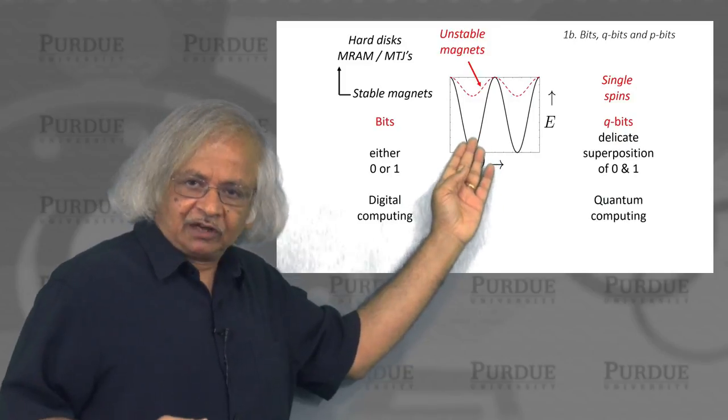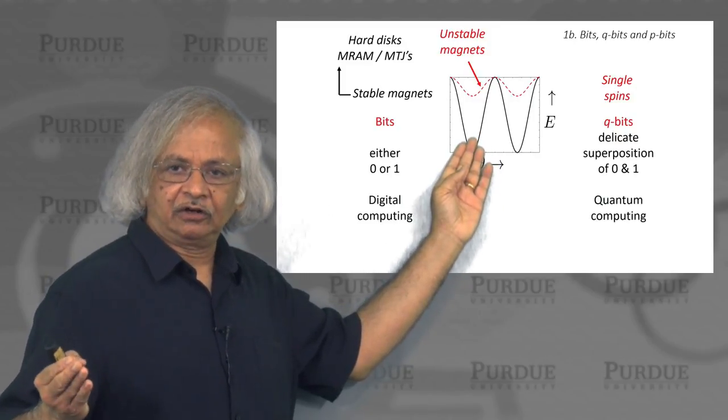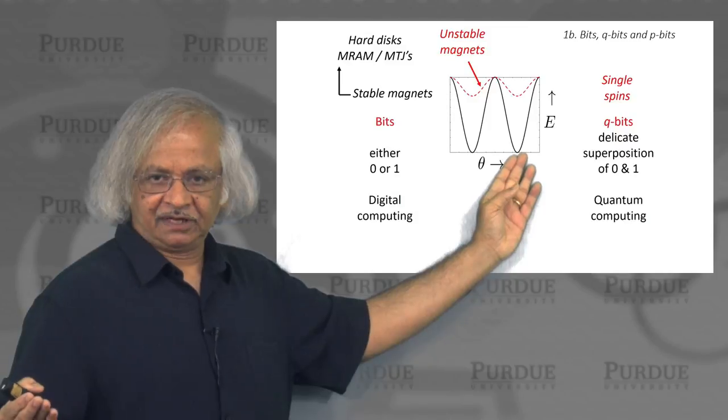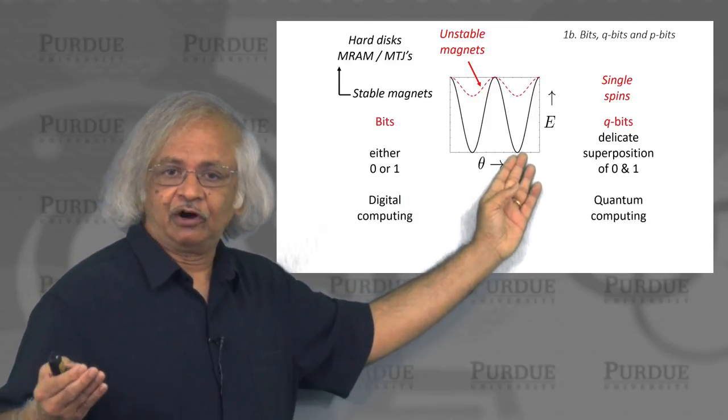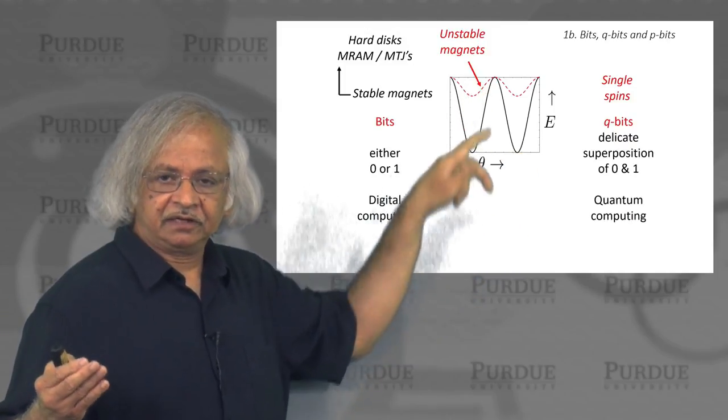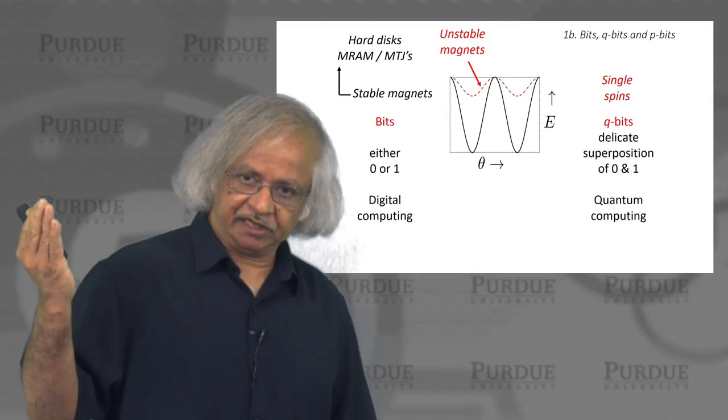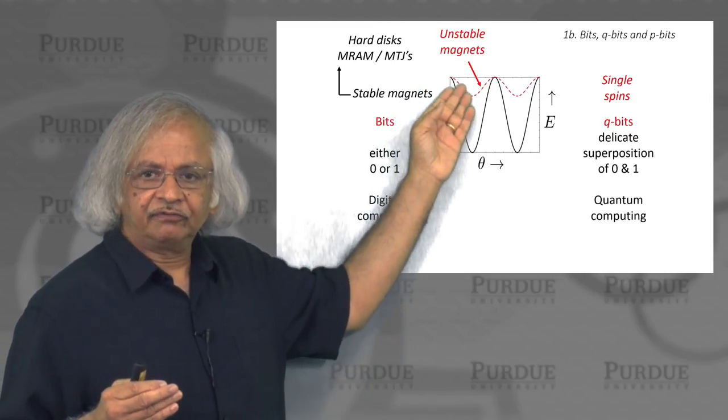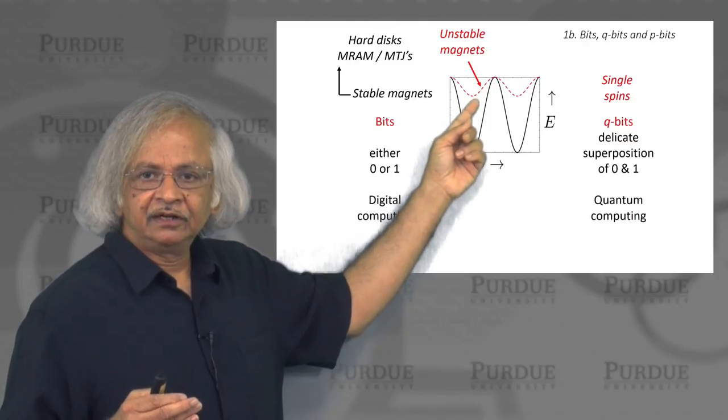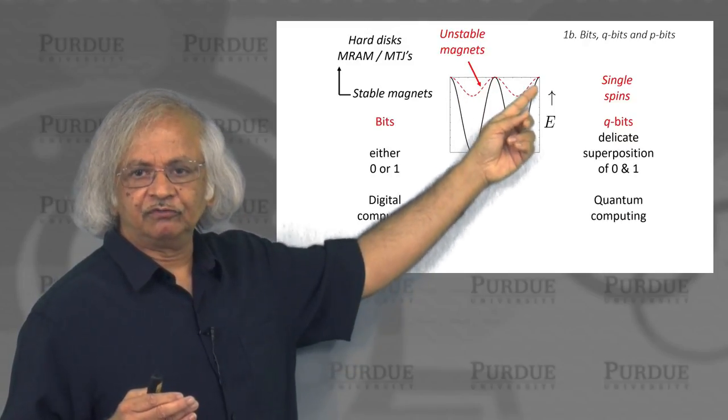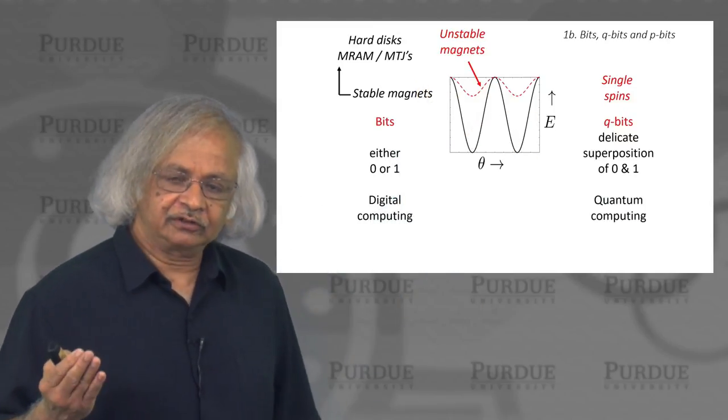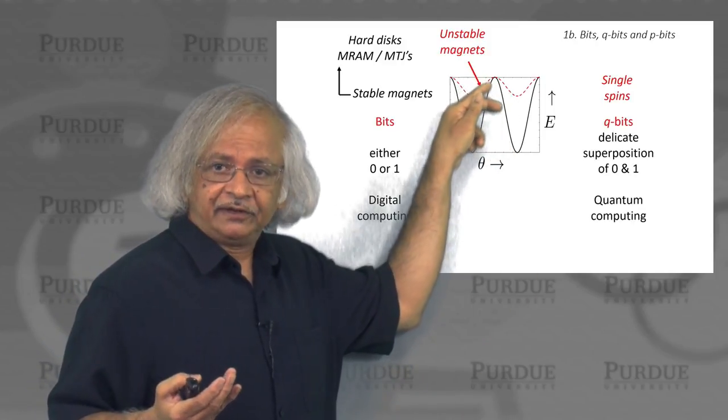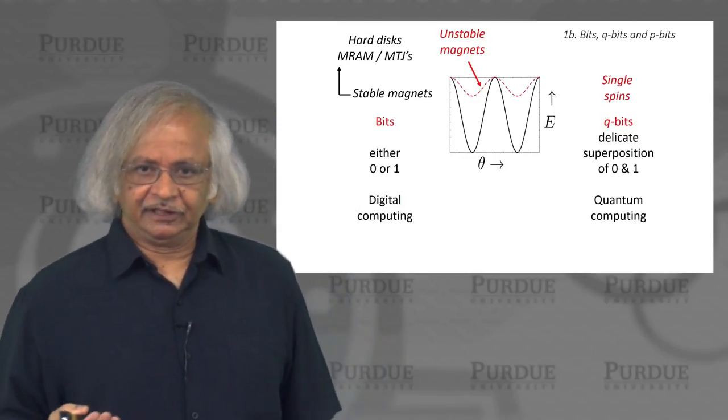Usually if you put the magnet in one of these states, it stays there for a very long time. Why? Because there's a big barrier in between which separates it from the other stable possibility. If you want the information to stay there for say 10 years, then usually you'd have to make this barrier like 50 times the thermal energy, the KT. A well-known problem with small magnets is that when you make them small, often the barrier is not big enough. If you put it in one of these stable states, it wants to go over to the other one and back, going back and forth in milliseconds or microseconds or even nanoseconds depending on the height of this barrier.